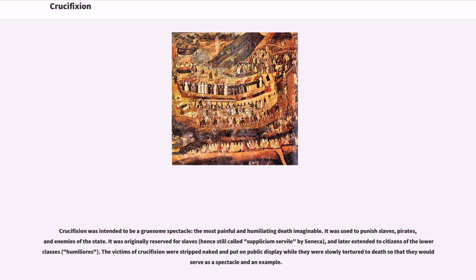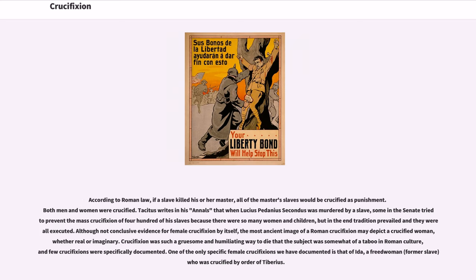Crucifixion was intended to be a gruesome spectacle — the most painful and humiliating death imaginable. It was used to punish slaves, pirates, and enemies of the state, originally reserved for slaves and later extended to citizens of the lower classes (humiliores). The victims were stripped naked and put on public display while slowly tortured to death. According to Roman law, if a slave killed his or her master, all of the master's slaves would be crucified as punishment. Both men and women were crucified. Tacitus writes that when Lucius Pedanius Secundus was murdered by a slave, the Senate ultimately ordered the mass crucifixion of 400 of his slaves, including women and children.